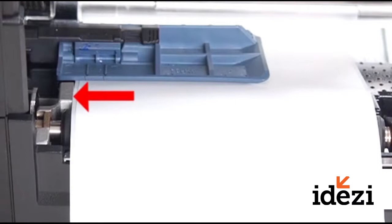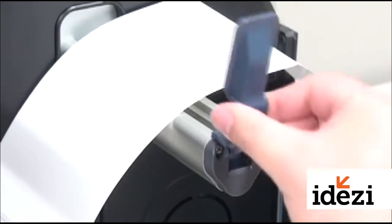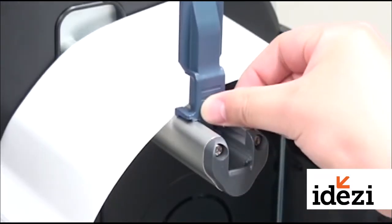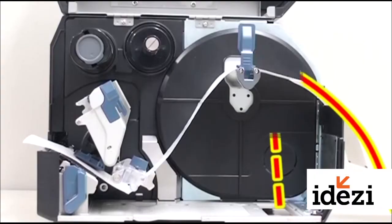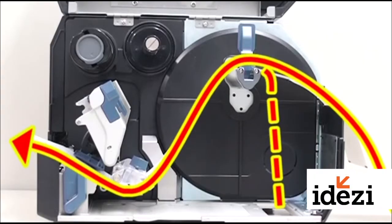Ensure that the media is against the metal block. Fold the media hub guide back and slide it against the media roll, making sure that the media is against the printer wall.